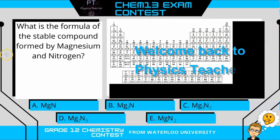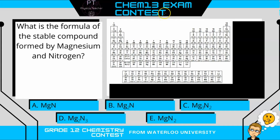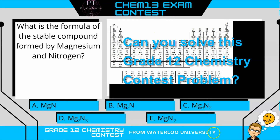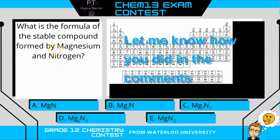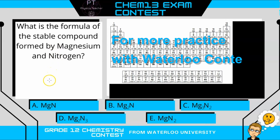Hi, welcome back to Physics Teaching. This was a question on the CHEM13 exam contest, which is a grade 12 chemistry contest from Waterloo University. It was question 9 of 40 questions, so it's fairly straightforward as long as you're familiar with how to form ionic compounds. I'll give it a quick try and I'll be right back with the solution.